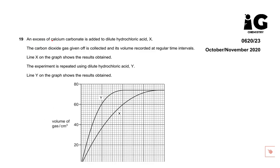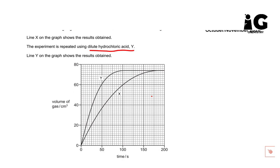Calcium carbonate which is in excess reacted with dilute hydrochloric acid X and once again with dilute hydrochloric acid Y. Regarding the graph, they produce the same volume of carbon dioxide gas because if we extend the line to the y-axis, this is the same volume of carbon dioxide gas.